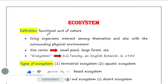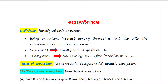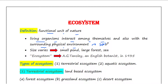An ecosystem is a functional unit of nature where living organisms interact among themselves and also with the surrounding physical environment. Physical environment means sunlight, soil, temperature, humidity, turbidity, etc.